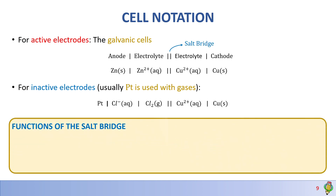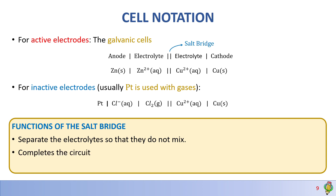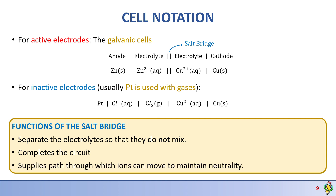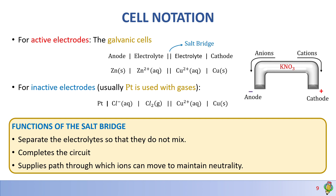Why do we need a salt bridge for our galvanic cell to function? It separates the electrolytes so they do not mix. The salt bridge also completes the circuit and supplies the pathway through which ions can move to maintain neutrality throughout the cell. Consider a salt bridge containing K⁺ and NO₃⁻ ions: the NO₃⁻ ions go towards the anode side, and the K⁺ ions go towards the cathode side. Just remember: N goes to anode and K goes to cathode.